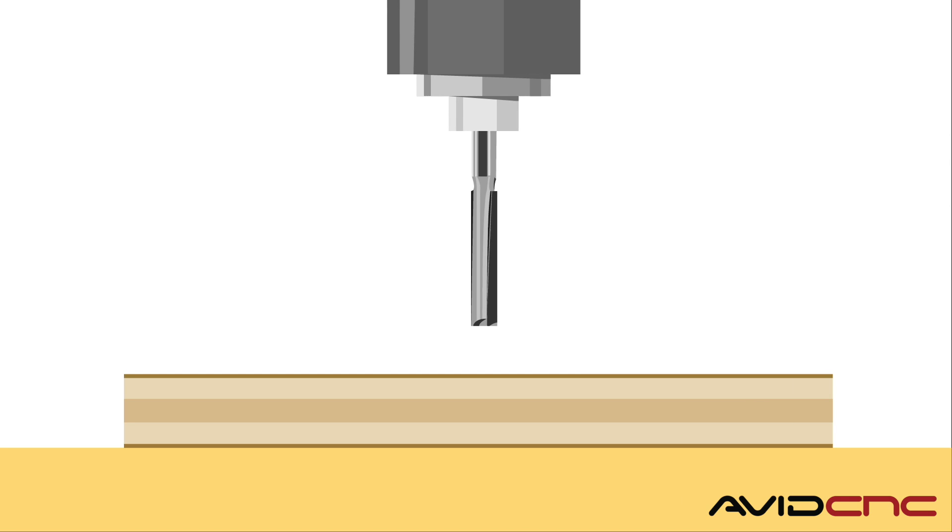Last but not least, we have straight bits. Straight bits are a classic design and provide an economical alternative to more expensive spiral bits. They produce a more neutral effect and don't put either an upward or downward pressure on the top or bottom surface of the material.